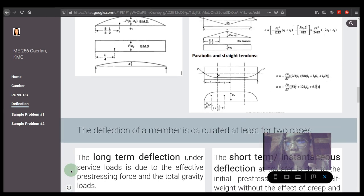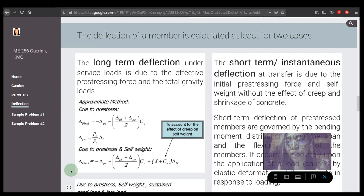The deflection of a member is calculated at least for two cases: we have the long term and the short term. The short term also termed as the instantaneous deflection. The long term deflection under service load is due to the effective prestressing force and the total gravity loads: self-weight, sustained dead load and live load.